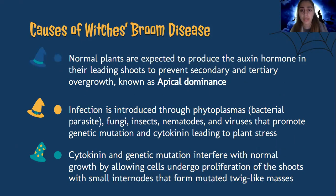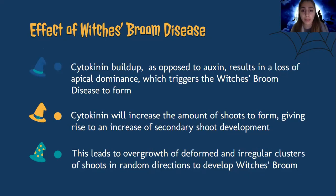The causes of Witch's Broom disease are complex. Normal plants are expected to produce auxin, the hormone, in their leading shoots to prevent secondary and tertiary overgrowth, known as apical dominance. However, when a plant gets Witch's Broom disease, it's usually because infection is introduced through phytoplasmas or bacterial parasites, fungi, insects, nematodes, and viruses, including other things that can promote genetic mutation and cytokinin leading to plant stress. Cytokinin and genetic mutation interfere with normal plant growth by allowing cells to undergo proliferation of shoots with small internodes that form mutated twig-like masses. Cytokinin buildup, as opposed to auxin, results in a loss of apical dominance, which triggers Witch's Broom disease to form.